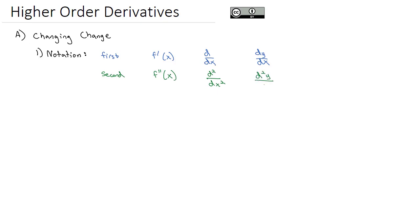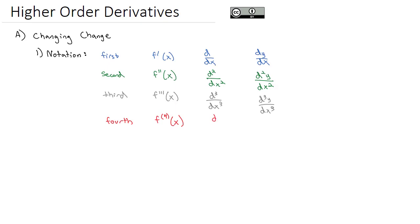With y in there, that y is just tacked on to the side. For a third derivative, that extends the idea: three primes, or d cubed over dx cubed, or d cubed y over dx cubed, meaning the third derivative. For the fourth derivative, instead of doing four primes — because that's starting to get annoying — we write a little superscript of 4. So f⁽⁴⁾(x) means the fourth derivative of x, and the other notation just continues with that pattern.